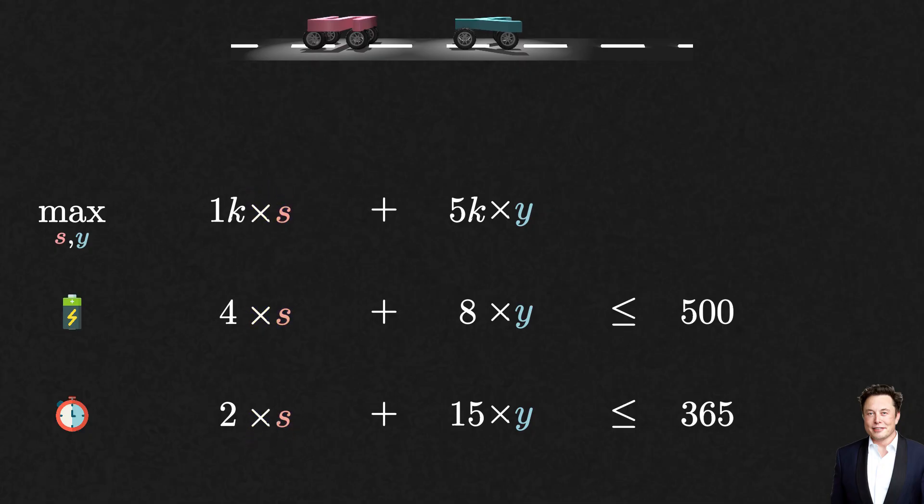Your decision variables are S, the number of cars of Model S, and Y, the number of cars of Model Y, and the amount of tax evasion that...